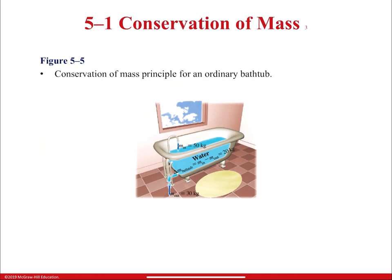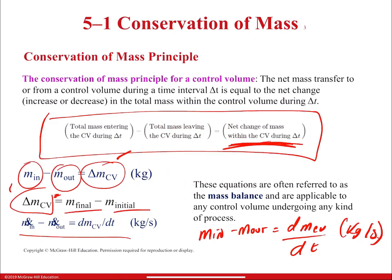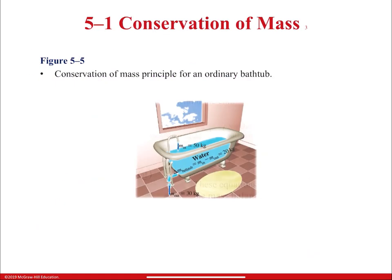For example, if you have 50 kilograms of water coming into a control volume — say a bathtub — and 30 kilograms coming out, then mass in minus mass out gives you the total mass remaining inside. Everything that comes in minus everything that comes out equals the net change of mass within the control volume during ΔT.